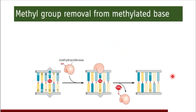The next DNA repair mechanism is methyl group removal from the methylated base. DNA methylation is essential for silencing retroviral elements — during evolution, viral DNA was incorporated into our DNA, and it needs to be silenced to prevent viral protein production. DNA methylation also regulates tissue-specific gene expression, has a role in genomic imprinting, and most importantly, it inactivates the X chromosome.